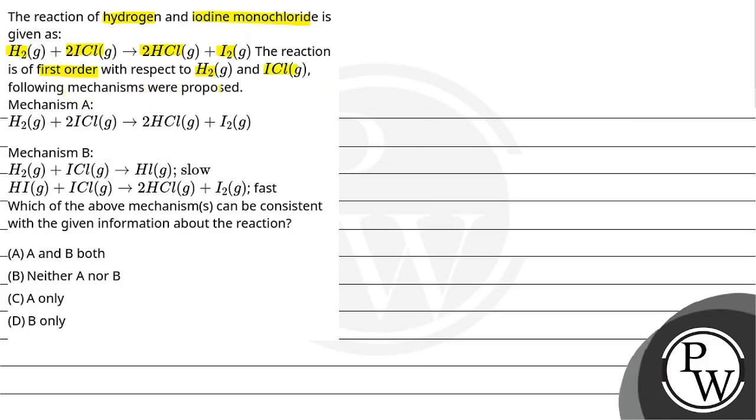Following mechanisms were proposed. Mechanism A: H2 plus 2 ICl gives 2 HCl plus I2. Mechanism B: H2 plus ICl gives HI in slow step. HI plus ICl gives 2 HCl plus I2 in fast step.